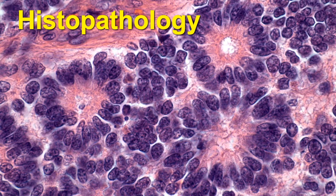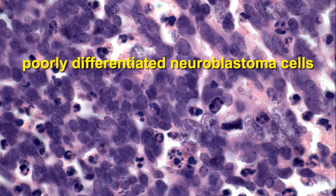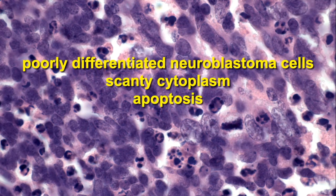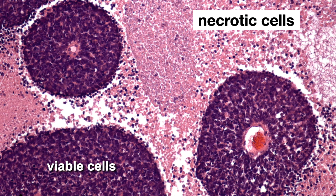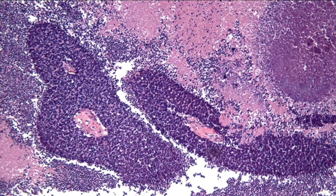Let's review a little bit of histopathology. Retinoblastoma, of course, is a small blue cell tumor composed of poorly differentiated neuroblastic cells. They have scant cytoplasm, there's lots of apoptosis, and numerous mitotic figures. The tumor tends to undergo necrosis when it extends approximately 90 to 110 microns away from a nutrient vessel. This gives rise to the appearance of cuffs and sleeves of viable tumor cells surrounded by eosinophilic necrotic tumor. The viable tumor appears blue in H&E stained sections.